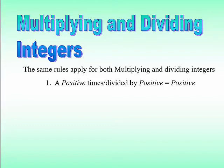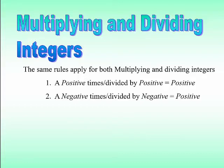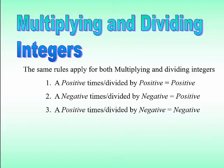A positive times or divided by a positive is always equal to a positive number. A negative times or divided by a negative number is also a positive number. And a positive divided by a negative or a negative divided by a positive, either one, it's always equal to a negative.